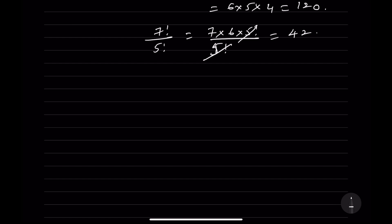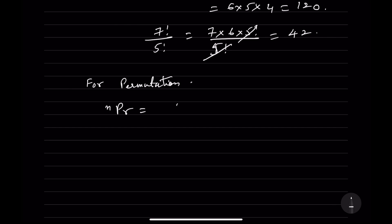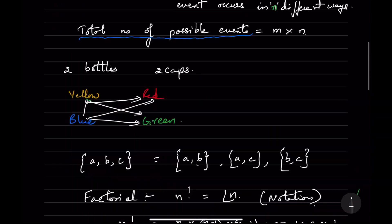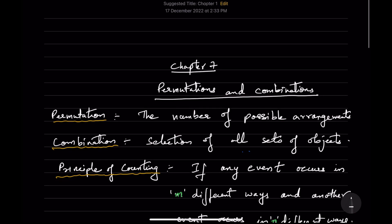Now we have two formulas to remember. For permutation: NPR = N! / (N−R)!, where R lies between 0 and N. For combination: NCR = N! / [(N−R)! × R!]. These are the important formulas for permutations and combinations.